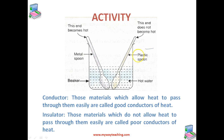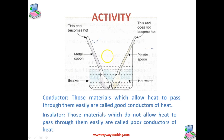After about two minutes, we touch the top ends of both the spoons with the hand one by one. We find that the top end of the metal spoon also becomes hot, whereas the plastic spoon does not feel hot. This is because heat from the hot water flows easily through the metal spoon and reaches its other end, whereas heat does not flow easily through the plastic spoon. So the metal spoon is a good conductor of heat whereas the plastic spoon is a poor conductor of heat.